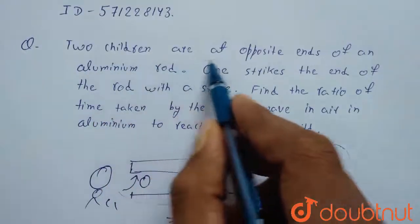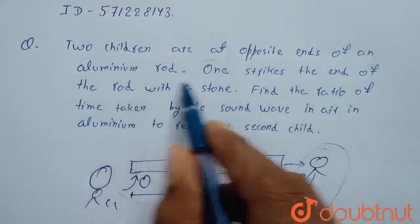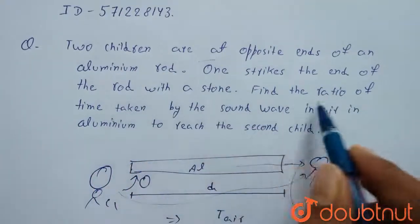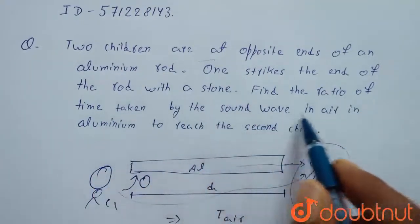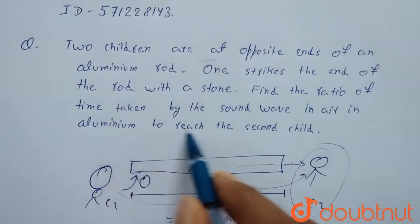Two children are at opposite ends of an aluminium rod. One strikes the end of the rod with a stone. Find the ratio of time taken by the sound wave in air in aluminium to reach the second child.